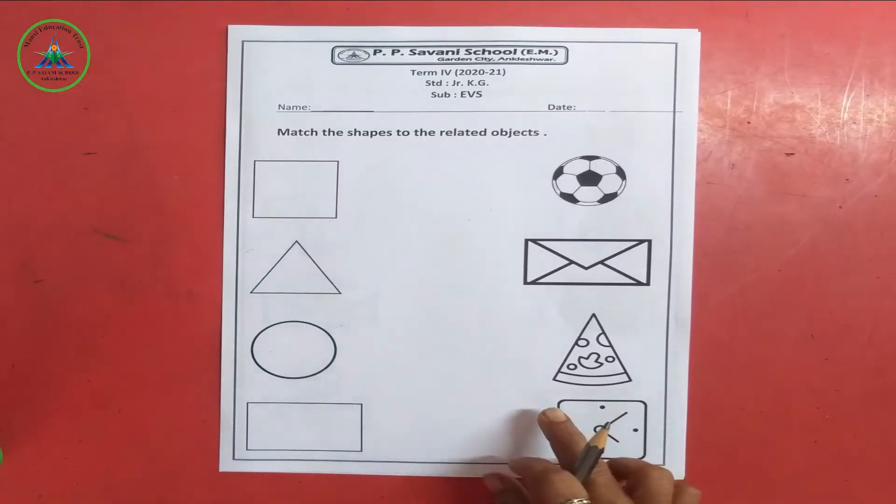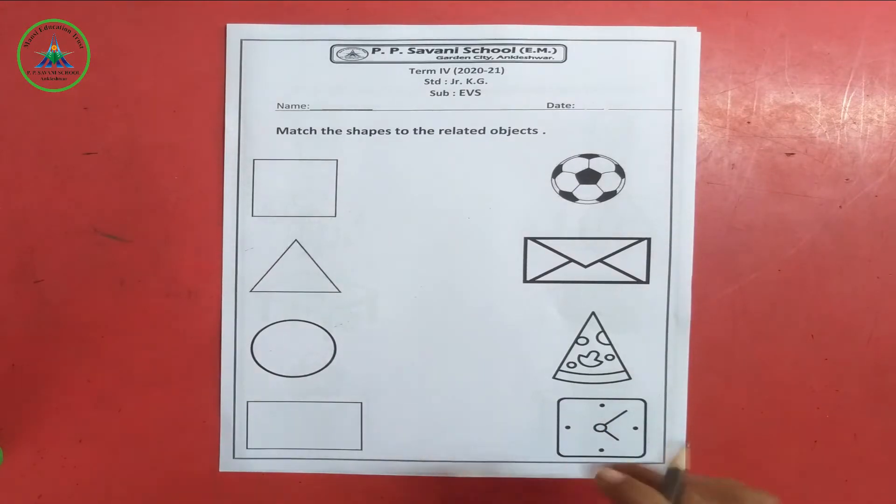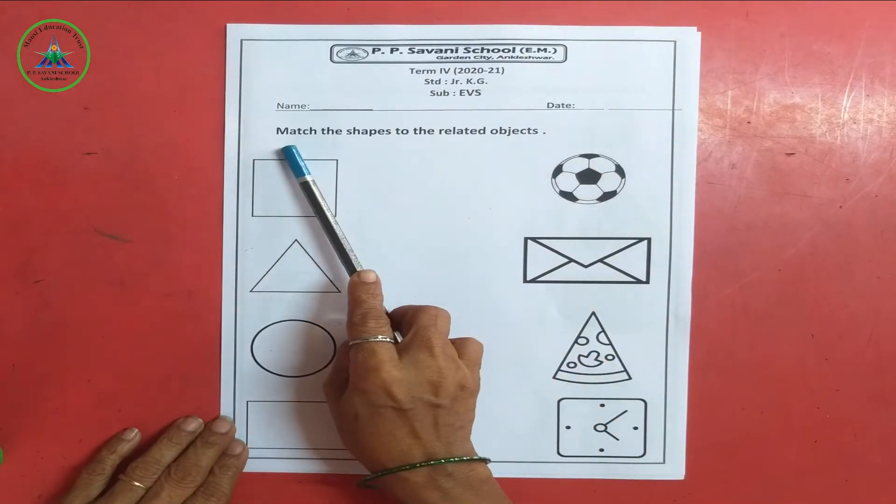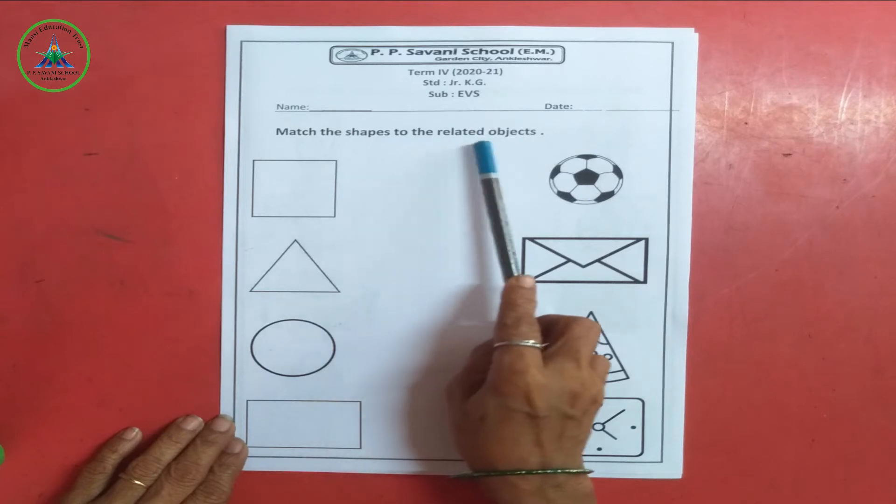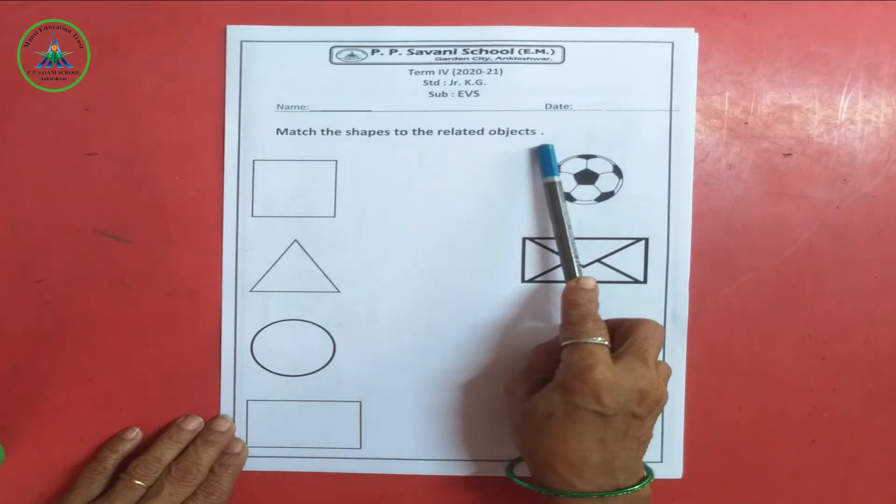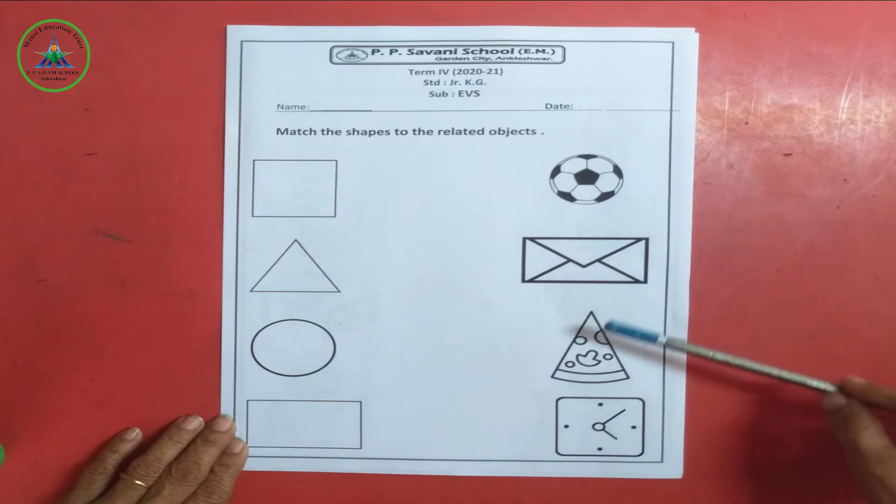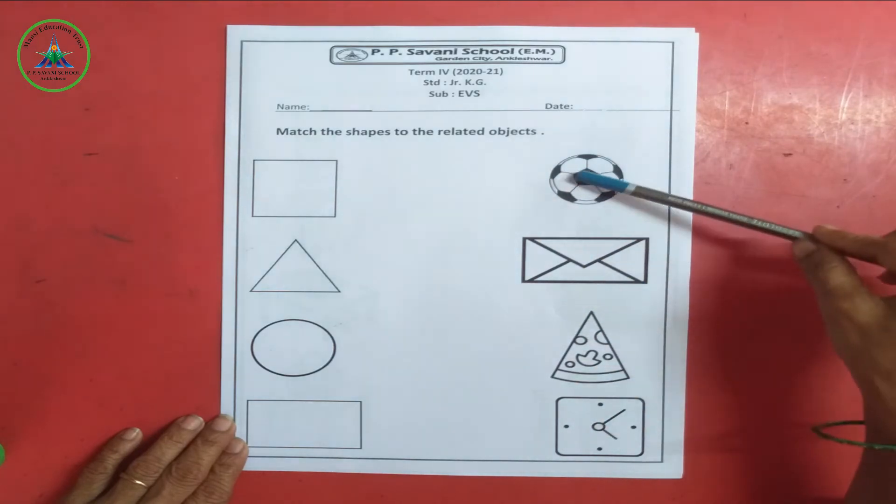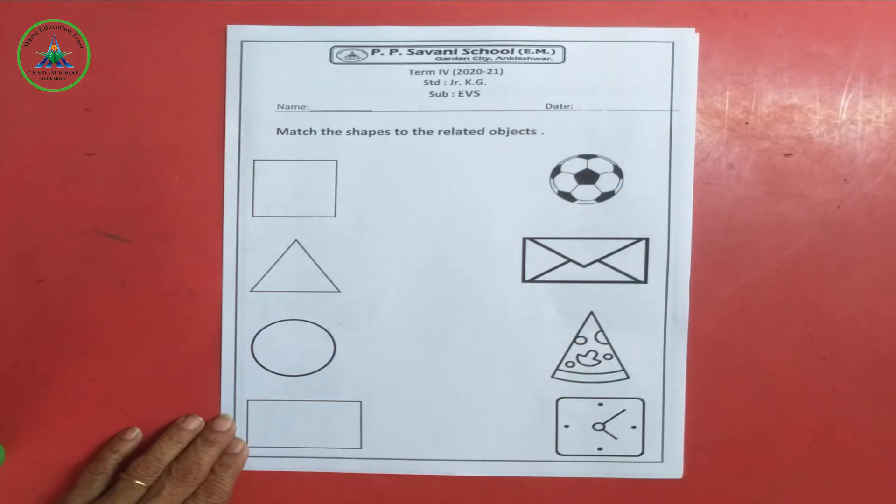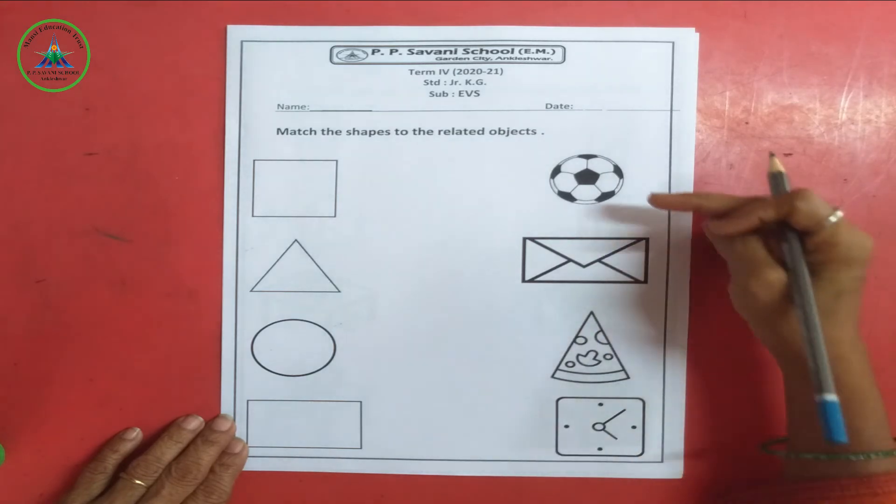This is our workshop. Ready. We will match the shapes to the right object. First of all see here. Which shape is this? This is the square. Okay. Now kids we will find objects related to this. Square.